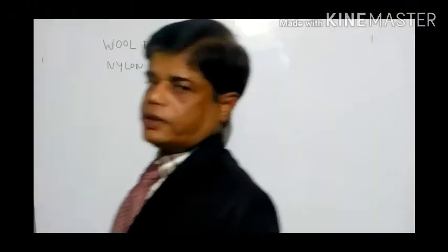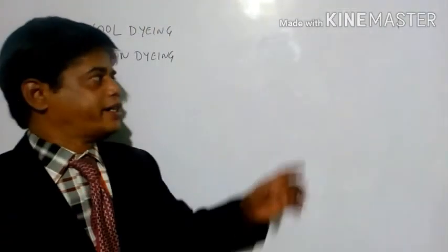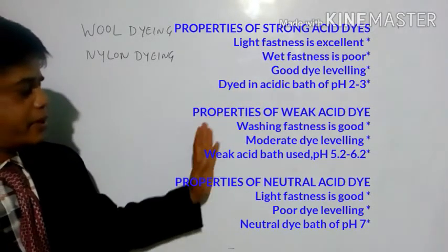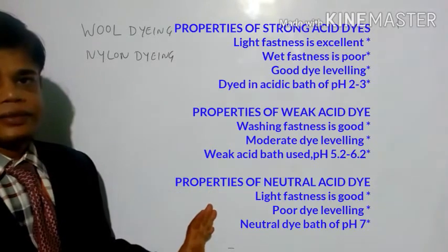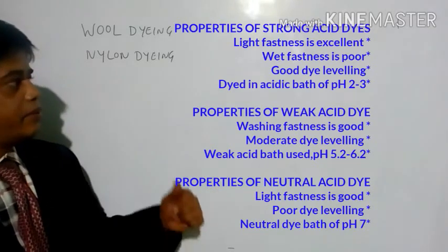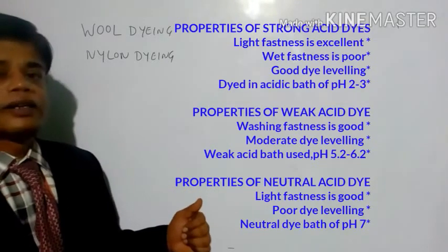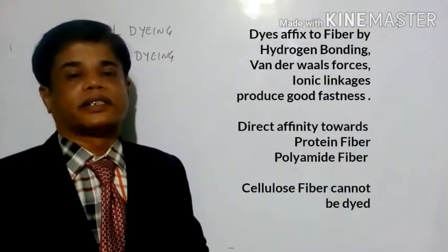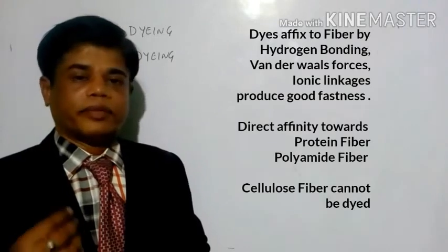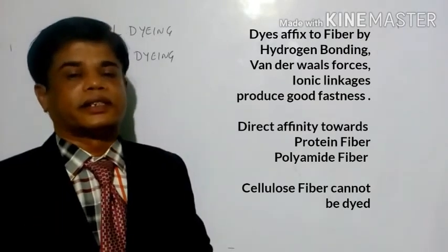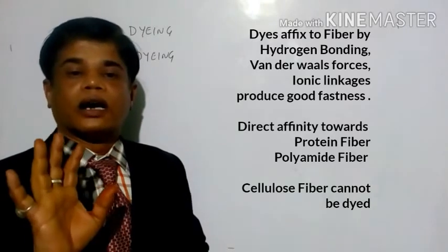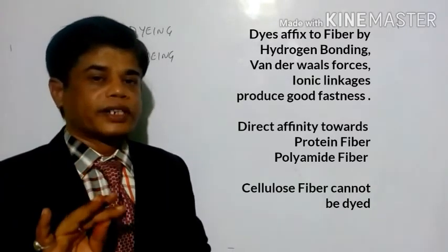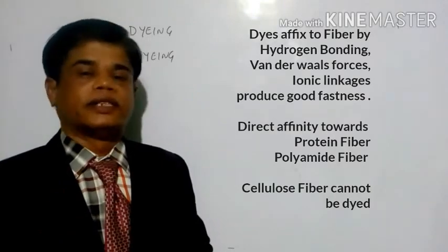The properties of acid dyes are listed here. The main property everybody considers is fastness — rubbing fastness, light fastness, and washing fastness. These three types of fastness are considered as key properties of acid dyes.